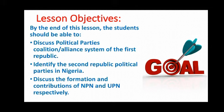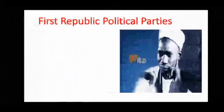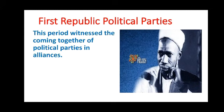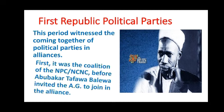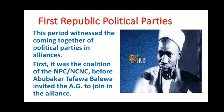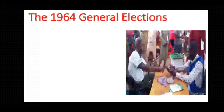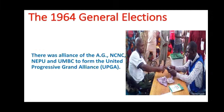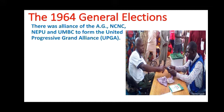The first Republic was a period that witnessed many parties coming together to form alliances. First, there was a coalition between the NPC and NCNC, before Prime Minister Abubakar Tafawa Balewa asked the AG — that is the Action Group — to join the alliance. By the 1964 election, parties that formed an alliance included the AG, NCNC, NEPU, and UMBC.